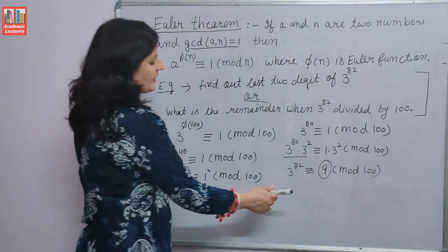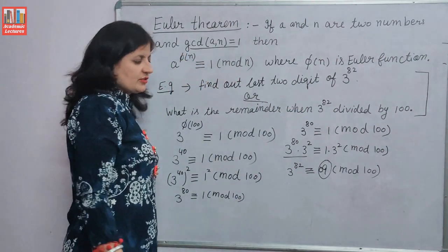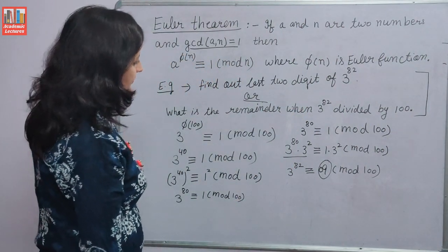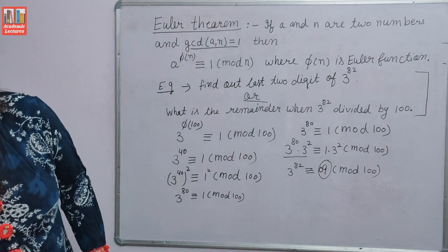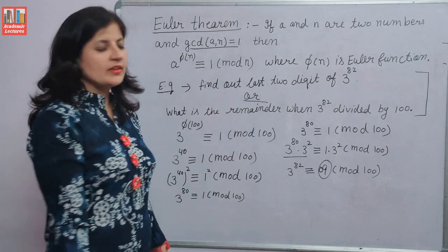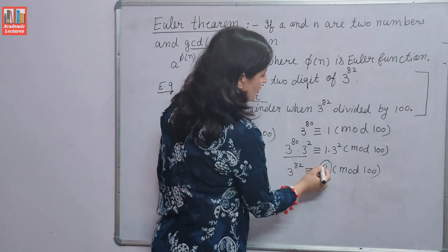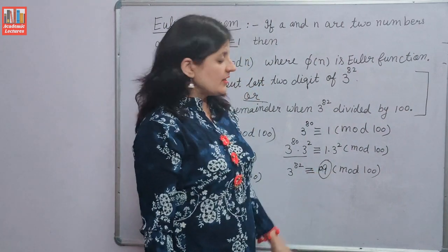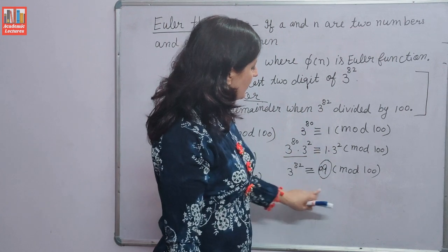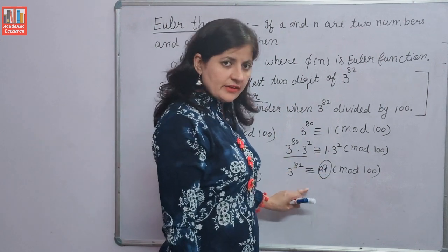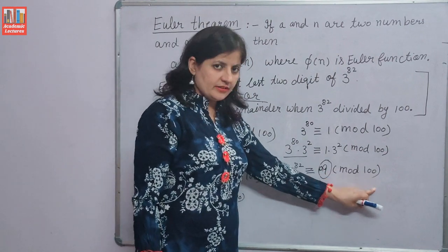The last two digits are 09. When the number 3 raised to the power 82 is divided by 100, the remainder is 9, and the last two digits are 09.